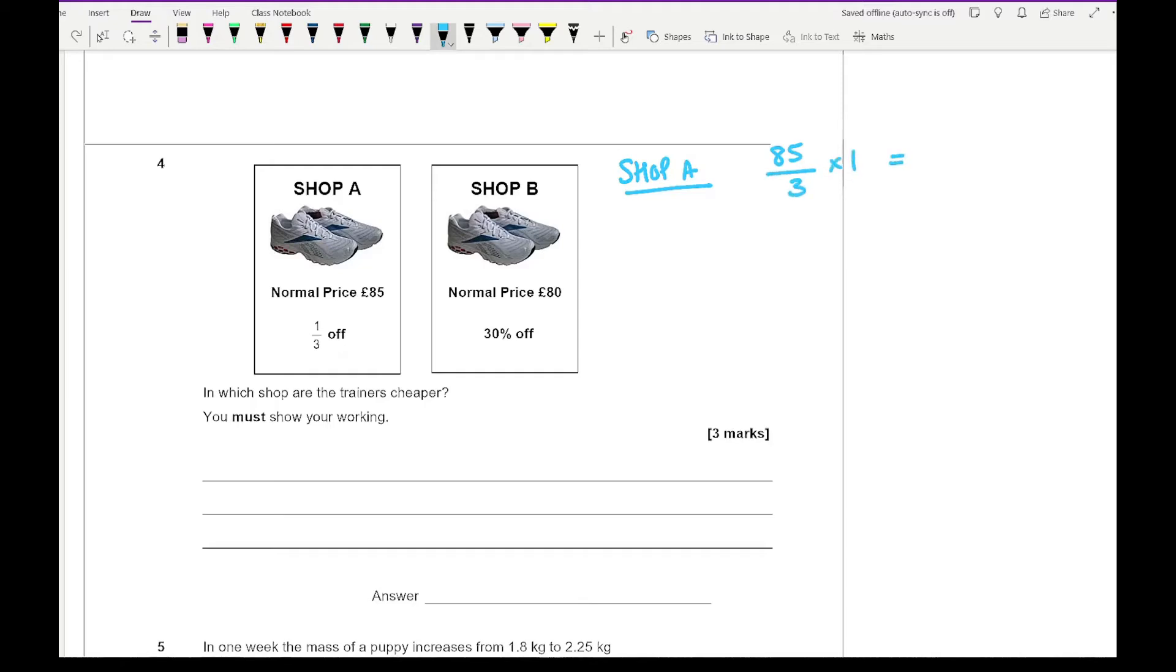So it's going to be £85 divided by 3 multiplied by 1, which is just the same as 85 divided by 3, and that comes up to a saving of £28.33. To work out the cost of the trainers it's going to be £85 minus £28.33 which comes to £56.67.